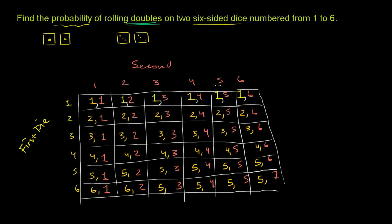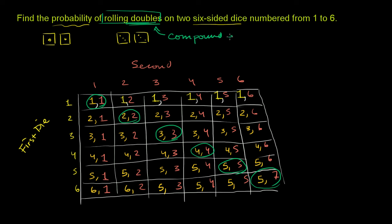We want to roll doubles. Looking at the grid, there are six outcomes that are doubles — that's a compound event. Rolling doubles is a compound event: a fancy word for saying there's more than one outcome that means this event has happened. A simple event would be associated with only one outcome, whereas this compound event is associated with multiple outcomes — each pair of matching numbers on both dice.